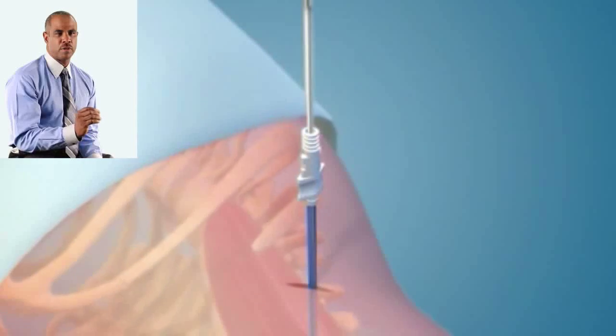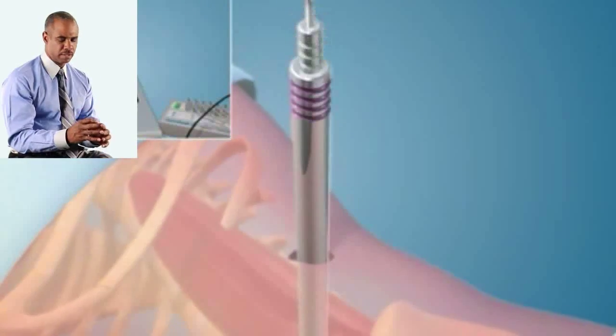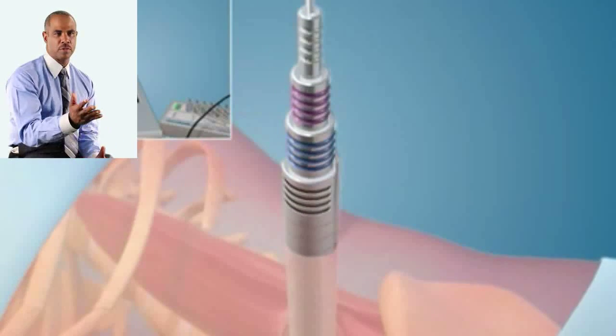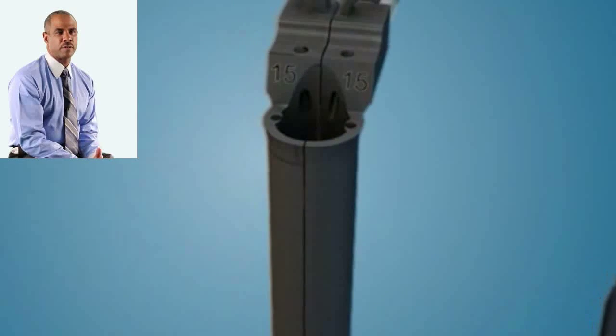We then gently place a probe into the disc space and use several dilators to make the incision bigger so that we can put in a retractor. The incision really just needs to be big enough to accommodate this retractor.